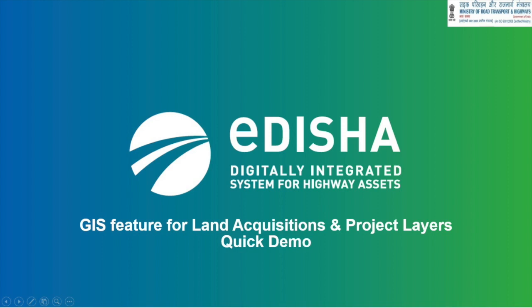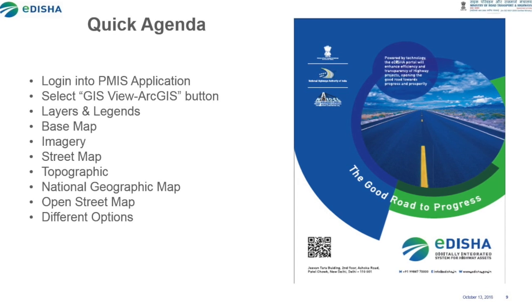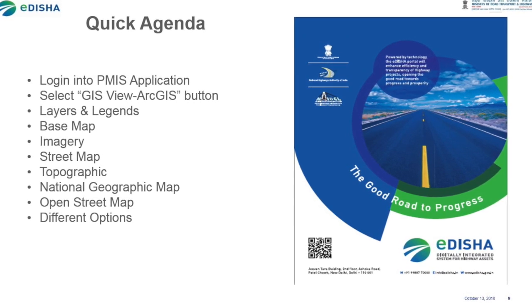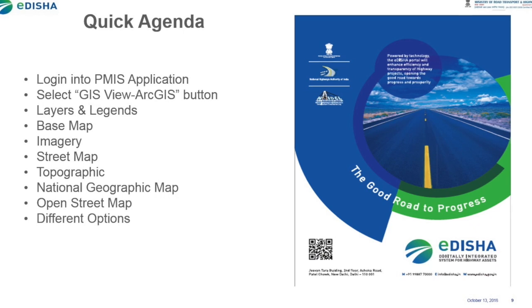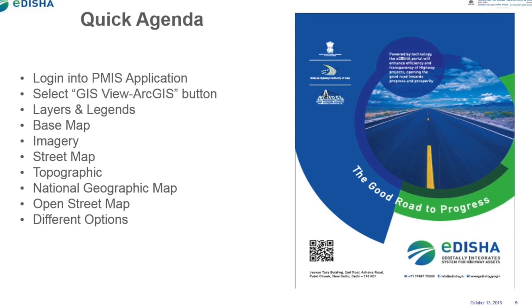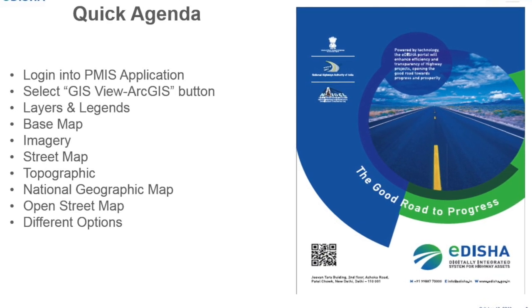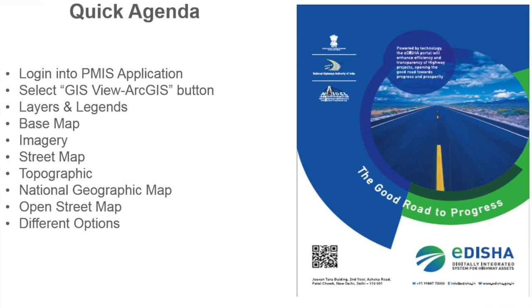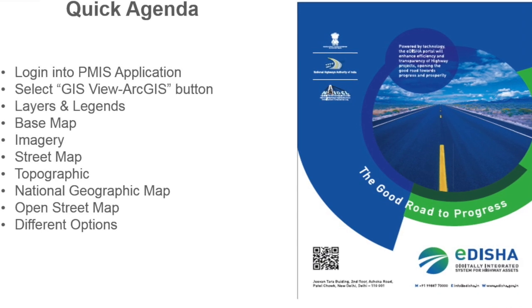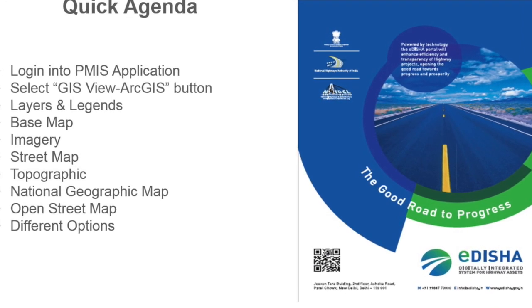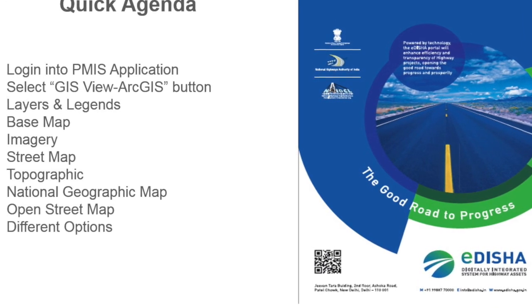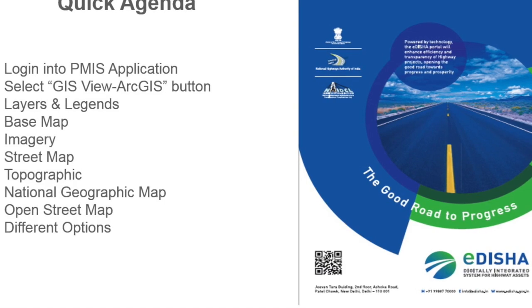In this module we will cover the GIS features for land acquisitions and project layers. Here is the quick agenda: first you need to log on to the PMS application, then choose the GIS layer. From there you can see different layers and legends, followed by base map, imagery, street map, topographics, national geographic map, and open street map. Finally, different options for navigation will be covered.